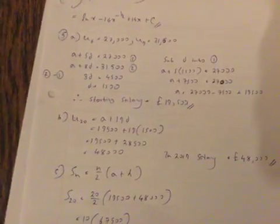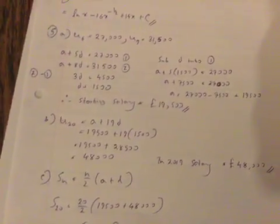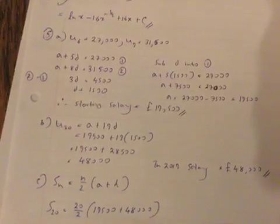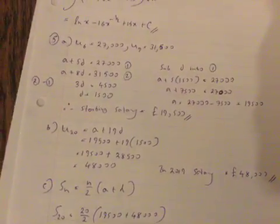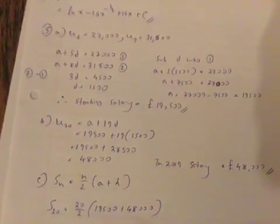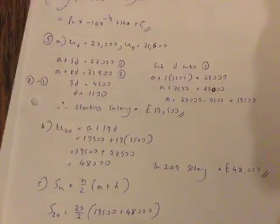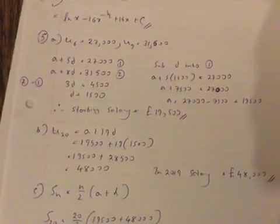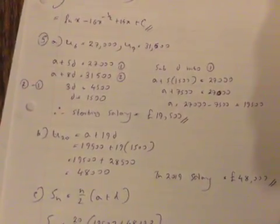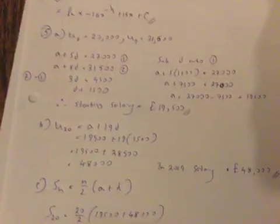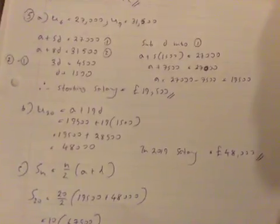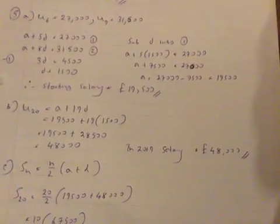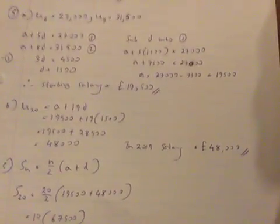Part b: the salary in 2019 is the 20th term, so it's a + 19d = 19,500 + 19 × 1,500 = 19,500 + 28,500 = 48,000. So the salary in 2019 equals £48,000.